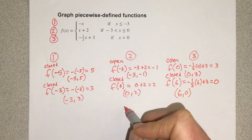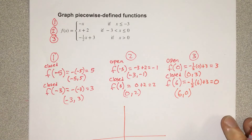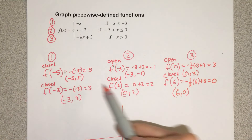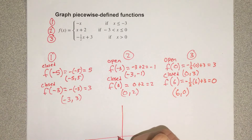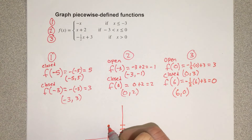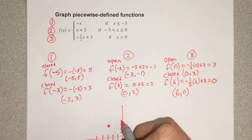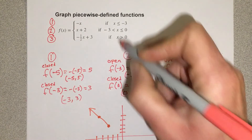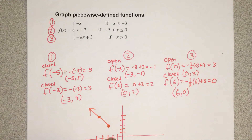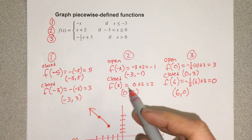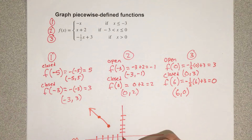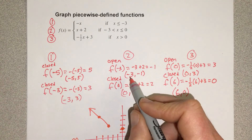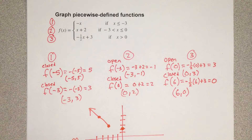Now I'm going to draw the graph, starting by marking the points — I've already labeled them open and closed. Starting with (−3, 3): put a closed dot there. Then (−5, 5): put a closed dot there. This line continues toward negative infinity since the domain is x less than or equal to negative three. Then (0, 2) is a closed dot. Negative three, negative one is an open dot, and since it's linear, it's a straight line between those spots.